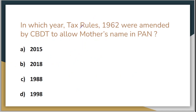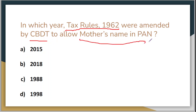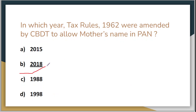Next question: in which year were the Tax Rules 1962 amended by CBDT — the Central Board of Direct Taxes — to allow the mother's name in PAN card? Option A is 2015, Option B is 2018, Option C is 1988, and Option D is 1998. The correct answer is 2018. Before this amendment, the mother's name was not mandatory in the PAN card.